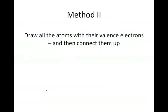There's another method that you can use, which is a little more intuitive. And in this one, what you do is you draw all the atoms with their valence electrons, and then you connect them up. This way, it actually helps you see where those lone pairs come from, for example.